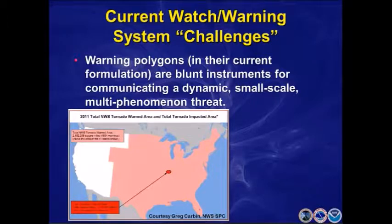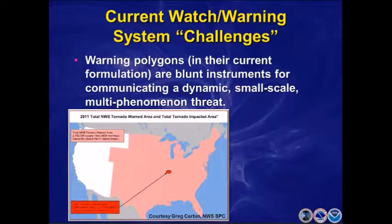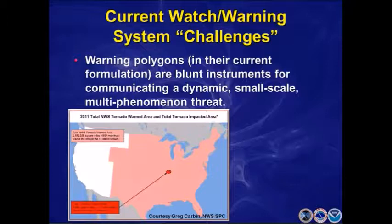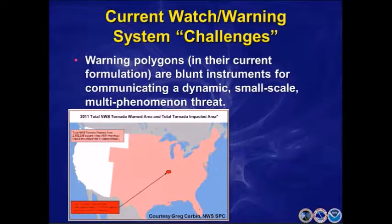That leads to the first point: warning polygons in their current formulations are rather blunt instruments for communicating this dynamic, small-scale, multi-phenomenon threat. Granted, when we put out a tornado warning, we're not just talking tornado — we're also talking hail, damaging winds, and such. So it's a blunt instrument; that's about the best way I can say that.